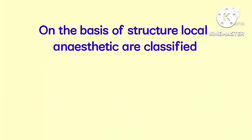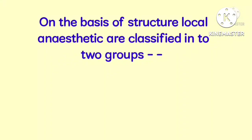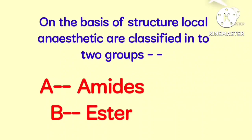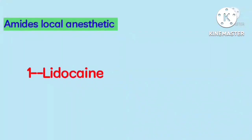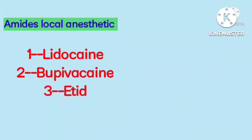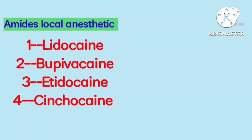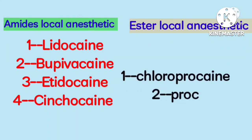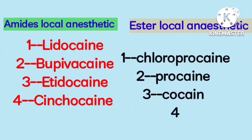On the basis of structure, local anesthetics are classified into two groups: amide and ester. Amide local anesthetics are lidocaine, bupivacaine, etidocaine, and cinchocaine. Ester local anesthetics are chloroprocaine, procaine, cocaine, and tetracaine.